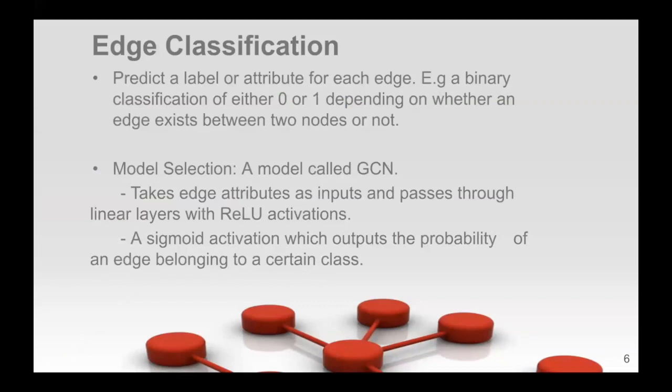And then edge classification. So in our case, we're predicting the label and attribute of edges. So we're trying to find the probability of an edge existing or not. So the probability ranges from zero to one. And a model that I will be using going forward is called a convolution network. And it takes edge attributes as inputs and then passes through linear layers with rectified linear unit activations, which I've talked about earlier. And then we also use the sigmoid activation to output the probability of an edge belonging to a certain class. So the class would be zero to one, which means whether it exists or not.